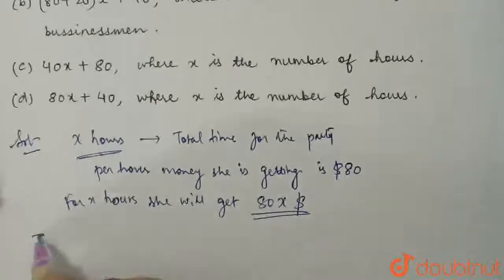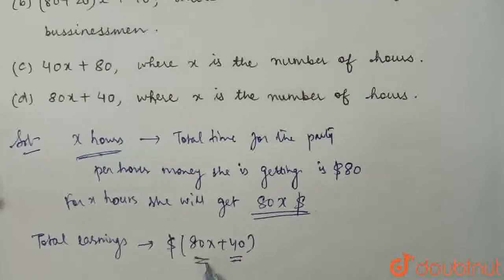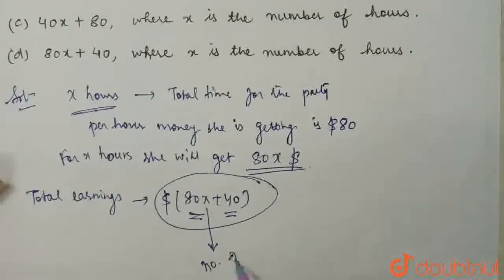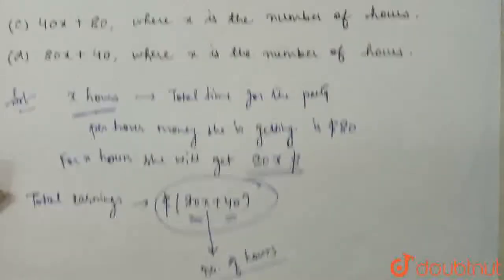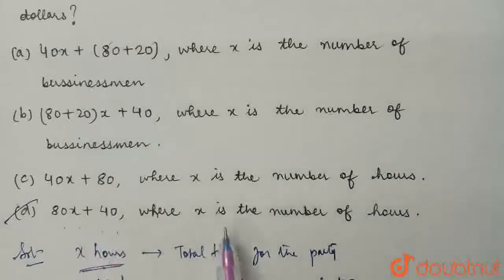Total earnings is $80x + $40, because she is serving all the food on time. This is the per-hour amount, so the total amount she is getting. Where x is the number of hours she is working, or the number of hours the party is going on. According to the given four options, option D is correct: her earnings is $80x + $40, where x is the number of hours she is working.